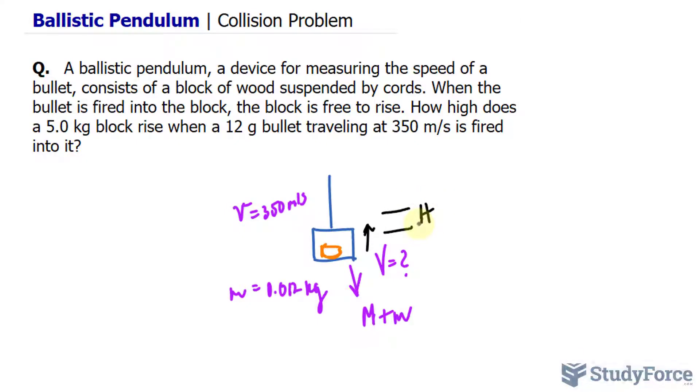Now the first thing you want to do with these types of collision problems is determine whether it is elastic or inelastic. An elastic collision is when the objects bounce, whereas inelastic is when the objects stick together, and this is an example of inelastic. The reason why we want to know that is because it determines what type of formulas we will be using moving forward.